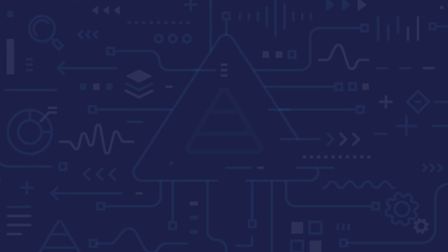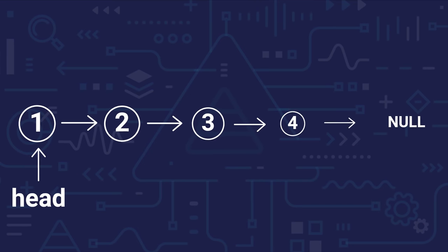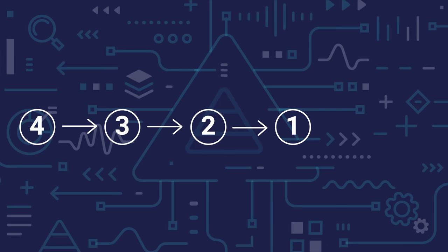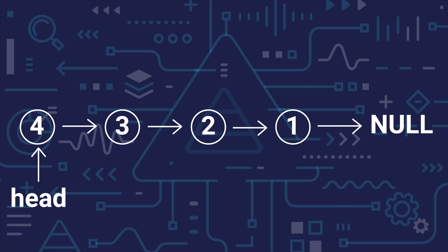Suppose I have a linked list here with 4 nodes and I have to reverse it, such that the links between nodes are in reverse direction. My head will point to 4, which will become my first node, and 1 will become my last node. We have two ways to do this: one is an iterative method, one is a recursive method.